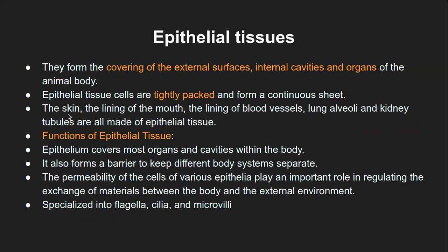Skin, the lining of the mouth or the lining of blood vessels, lung alveoli, and kidney tubules are all made up of epithelial tissue. The skin has various layers — dermis, epidermis, and so on — and at least the uppermost or outermost layer consists of epithelial tissues. The lining of the blood vessel — specifically the innermost part — is called endothelium. 'Epi' refers to outside, 'endo' refers to inside. Only in the case of blood vessels is the epithelial tissue called endothelial cells or endothelium.